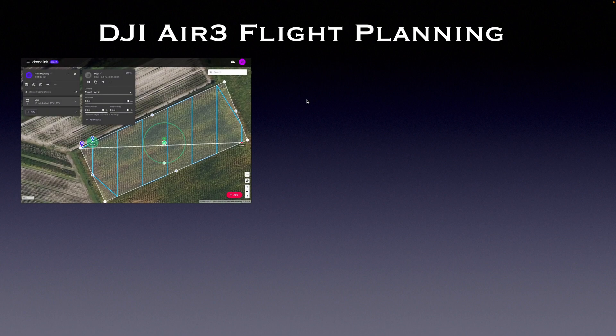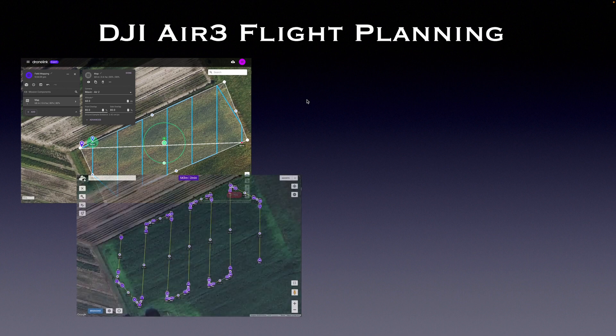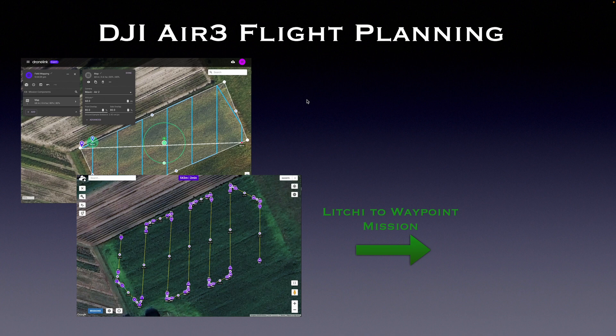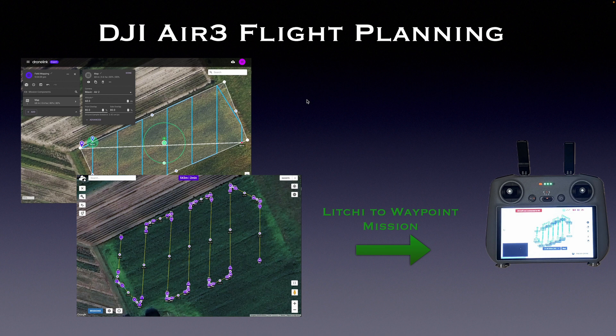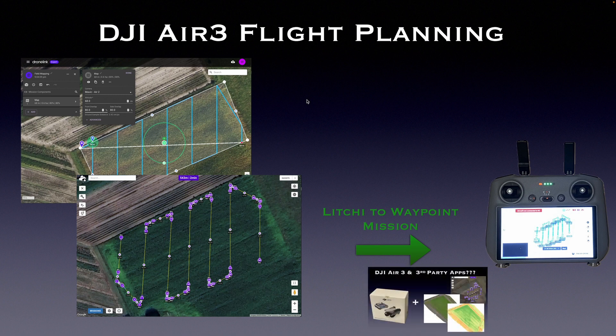If your drone is not supported — as in my case with the DJI Air 3 — there are some more steps you have to do. For me the best way is as follows: first, with DroneLink I will draw a rectangle around the field I want to map, so DroneLink will give me the exact flight path and overlap I can set. Then I recreate the same flight path in Liji, export it as a CSV file, convert that CSV file to a KMZ file with the DJI 2 Waypoint mission, and then import it into the controller. If you want more details about this workflow, I created a separate video — the link is in the description below.